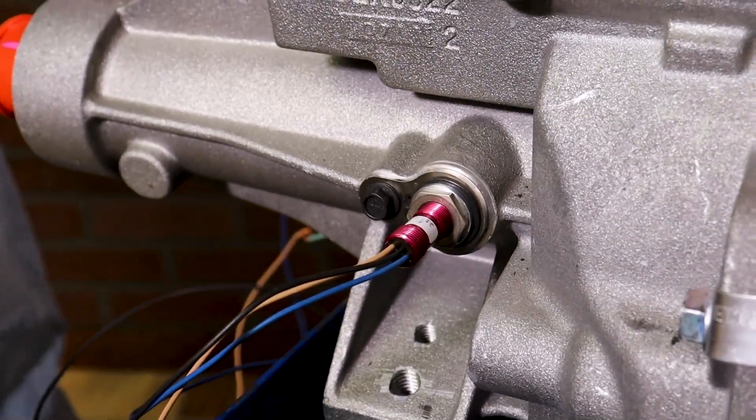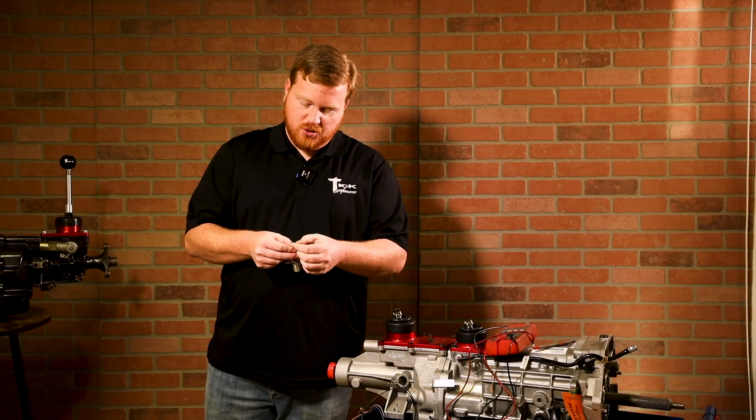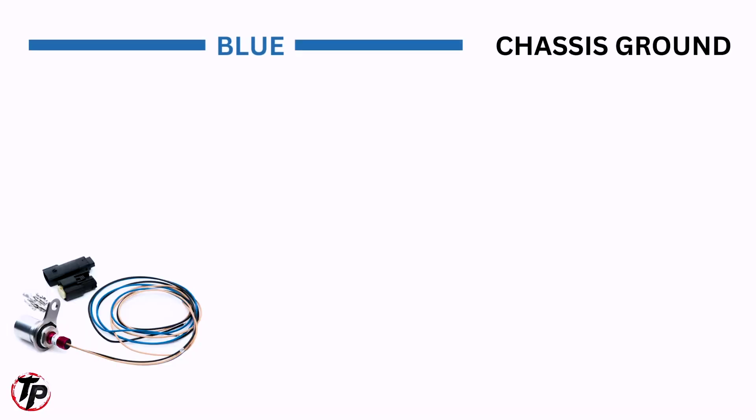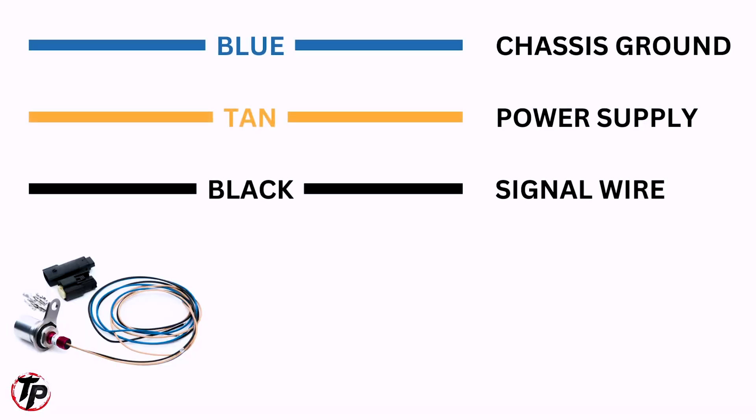And then you're going to connect your three wires. So blue is going to be ground, tan is going to be power and black is going to be the signal wire that goes to the ECU.